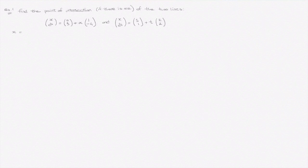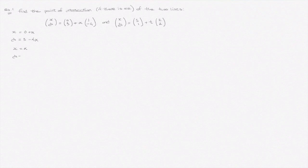To find the point of intersection, the first thing we'll do is write each of these two lines in their parametric form. For the first line, that would be x equals 0 plus alpha, and y equals 3 minus 4 alpha. We can rewrite these as x equals alpha and y equals 3 minus 4 alpha.